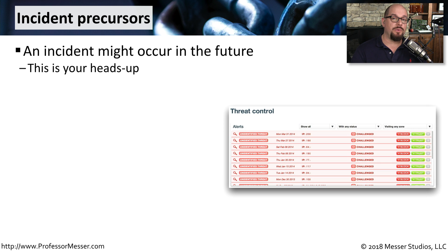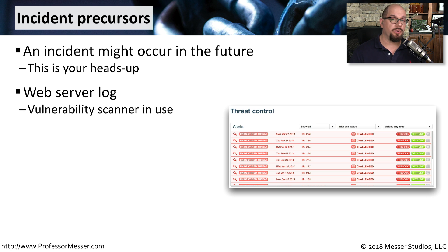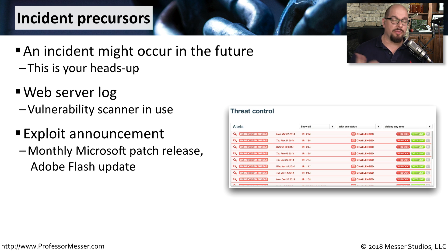It's always useful if you can be warned before an actual incident occurs. There are a number of ways to monitor your environment to give you a heads up on what might be coming. One way might be through your existing web server logs — you're logging everything that everyone is doing on a web server, and there are vulnerability scanners that can sift through all of that data to provide insight on where security incidents might be occurring. Another good precursor to look for are the monthly announcements on security vulnerabilities, such as the monthly Microsoft patch release or anything from Adobe, to find out where the particular holes may be in our operating systems and applications.